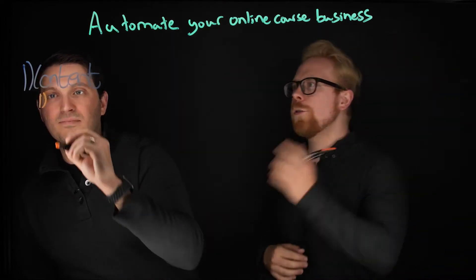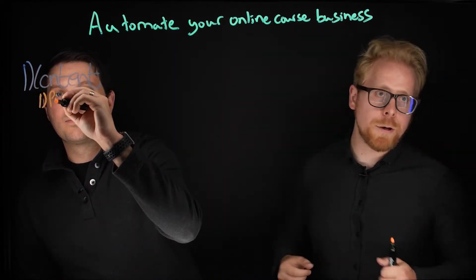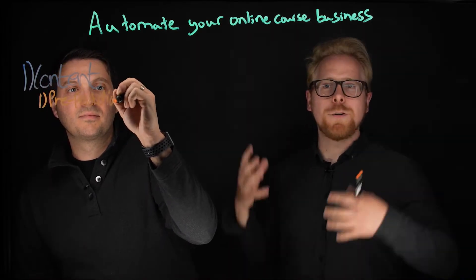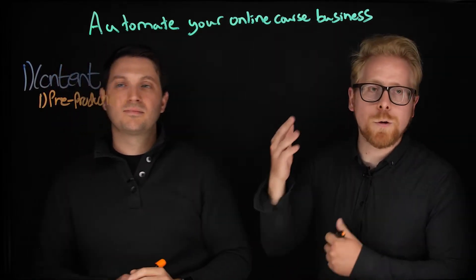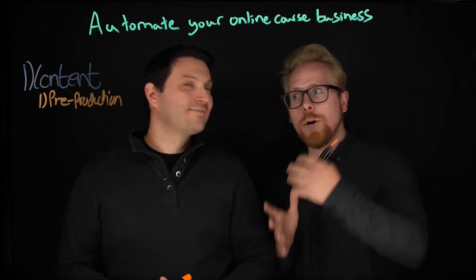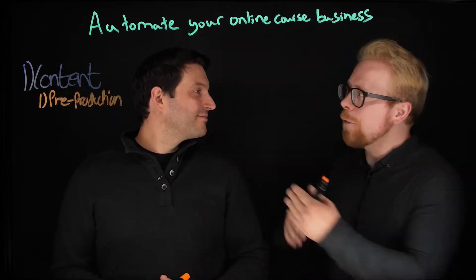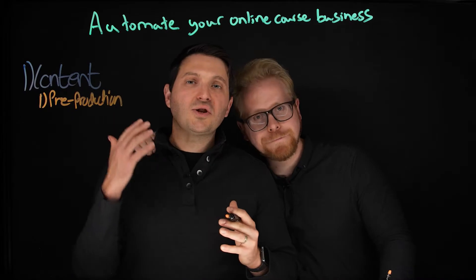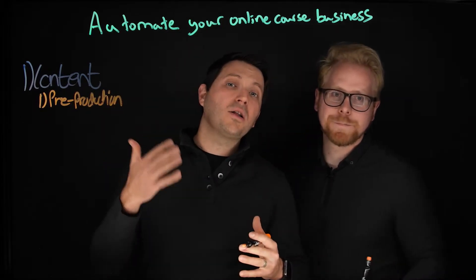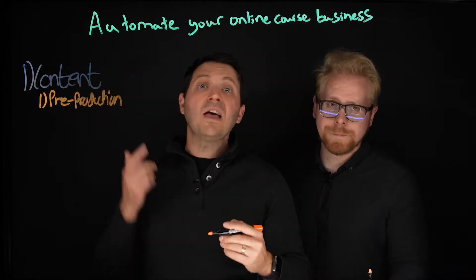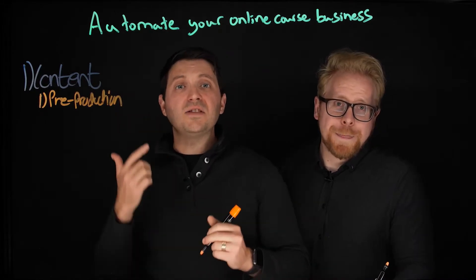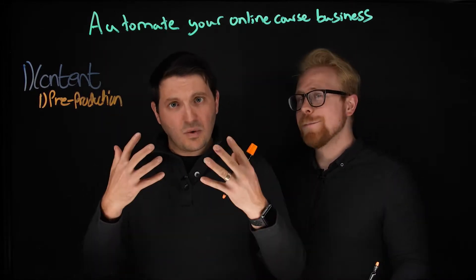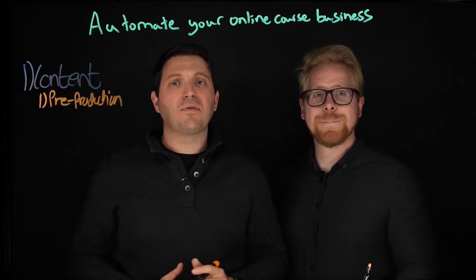There are three parts to content if you want to automate the process. The first part is pre-production — this is about how you script your content and figure out what content you're actually developing. To figure out what kind of content to develop, you need to ask your learners. Identify the biggest challenges your learners have, and based on their needs and personas, that determines the type of content you create.